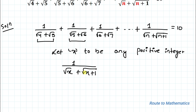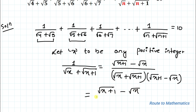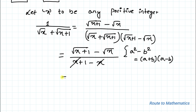To remove the radical in the denominator, let's rationalize each term. We multiply by (√(x+1) − √x)/(√(x+1) − √x), giving us (√(x+1) − √x)/((x+1) − x). Here we apply the algebraic identity a² − b² = (a+b)(a−b), so the denominator simplifies to 1, leaving √(x+1) − √x.